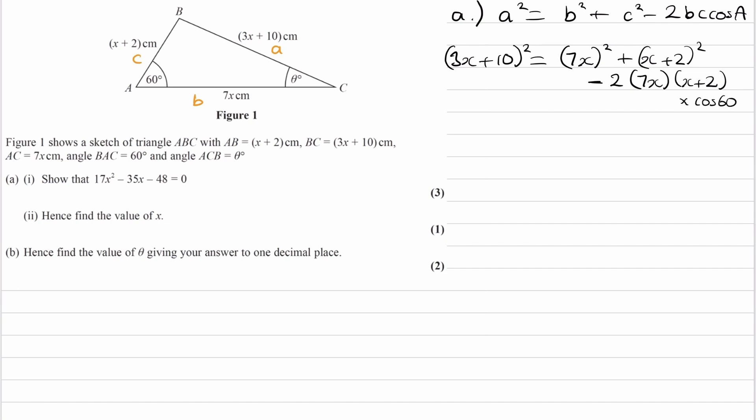So I think what I'll do is I'll write that out in full down here. So let's expand this out. The left-hand side becomes 9x squared plus 60x plus 100. And that's equal to 49x squared plus x squared plus 4x plus 4 minus.